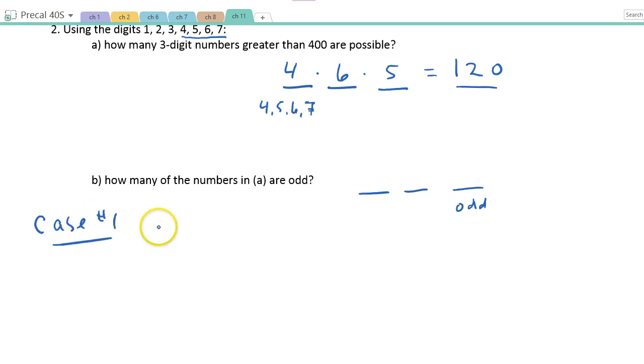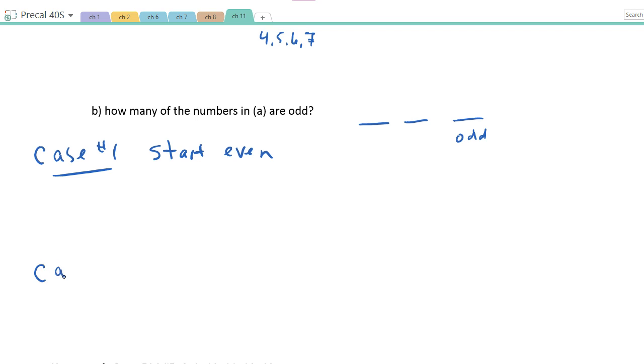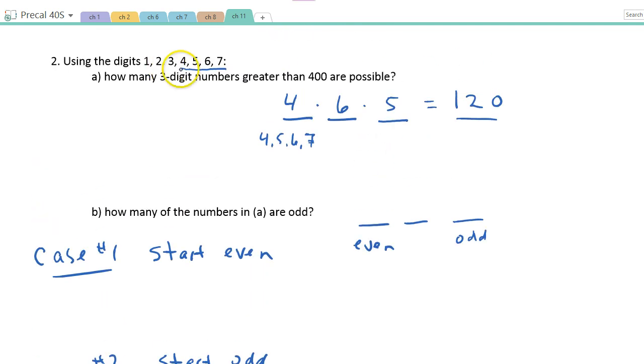Case number one, if I start with an even, and case number two, if I start with an odd. So if I start with an even number, put an even number out here first, how many even numbers do I have? Two, four, six. I have three even numbers, but they have to be greater than 400. So out of this list, how many even numbers do I have? Two. So I have two I can place there.